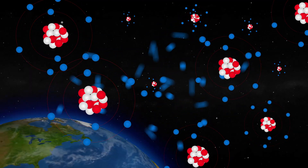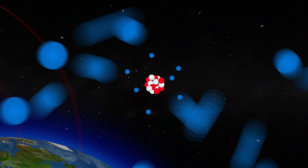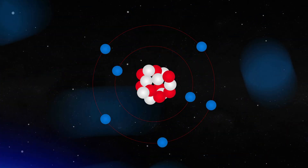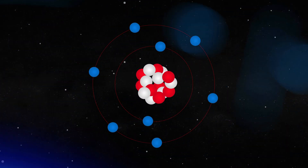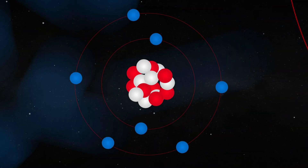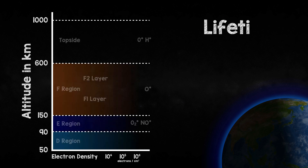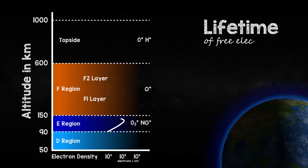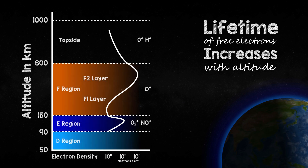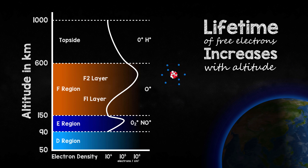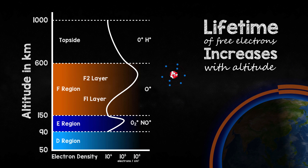These free electrons are lost from the ionosphere when they recombine with charged or ionised oxygen atoms. This process occurs constantly. The lifetime of free electrons increases with altitude, so it's greatest in the oxygen-rich F2 layer. It's just one reason why the F region persists through the night.